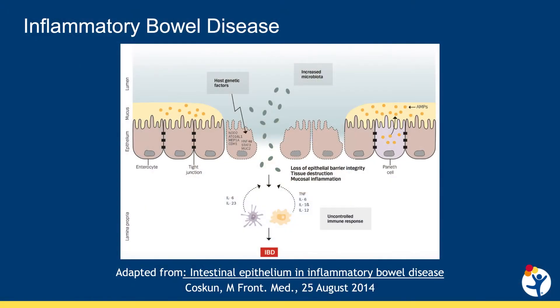In order to orient you to this work, I want to review the disease of IBD. IBD encompasses the diseases of Crohn's disease and ulcerative colitis. Though there are differences between these diseases, they are both diseases involving inflammation of the digestive tract. The development of IBD is believed to be multifactorial, with contribution from immune predisposition, environmental exposure, microbiome, and GI barrier function. For today, we will be primarily focusing on the barrier function component.